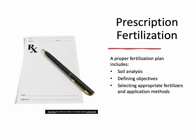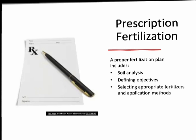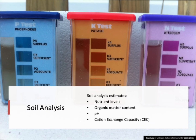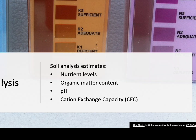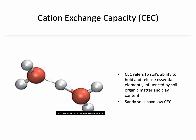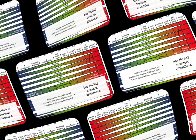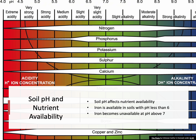Fertilization should be based on the tree's health objectives, the need for supplemental nutrients, and analysis results. A soil analysis helps estimate available nutrients, organic matter content, pH, and cation exchange capacity (CEC). CEC measures the soil's ability to hold and release essential nutrients — clay and organic matter increase CEC, while sandy soils tend to have low CEC. Soil pH affects nutrient availability; for example, iron is more available when pH is less than 7 but virtually unavailable when pH is above 7.